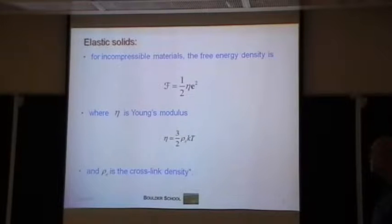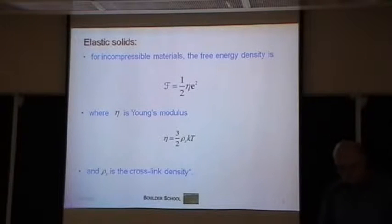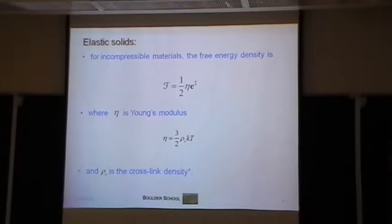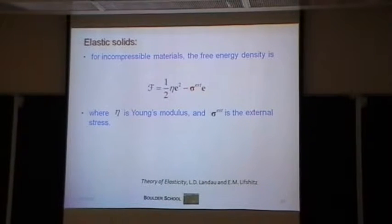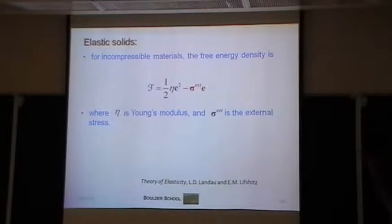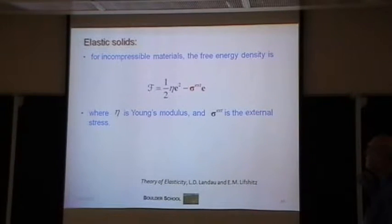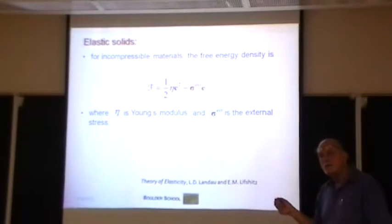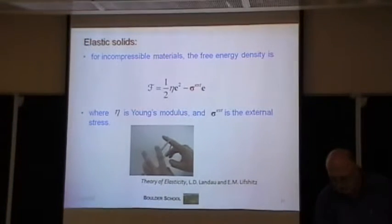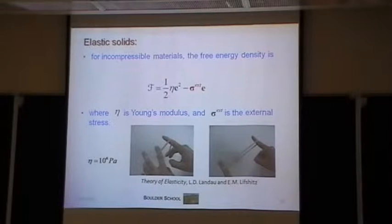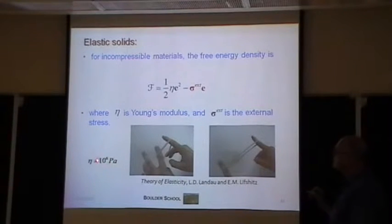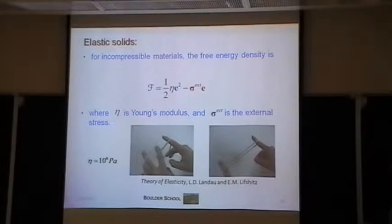That's the simplest picture of rubbers. If you apply a stress, you add a stress term to the free energy — just like adding an electric field term for liquid crystals. When you minimize the free energy, you find that the strain equals the stress divided by Young's modulus, which is what we expect. For most rubbers like rubber bands, Young's modulus is about 10^6 Pascal — they're very soft.